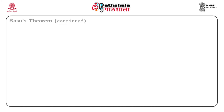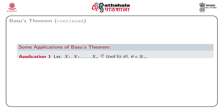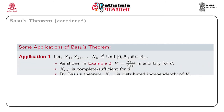We now consider some interesting applications of Basu's theorem. In our first application, let x1, x2, …, xn be independently distributed Rectangular(0, θ) random variables where θ > 0. We have seen that the statistic V = x(n)/x(1) (the ratio of the largest to the smallest order statistic) is ancillary for θ, and we know that T = x(n) (the largest order statistic) is complete sufficient for θ. Hence, T is distributed independently of V.